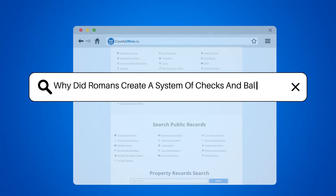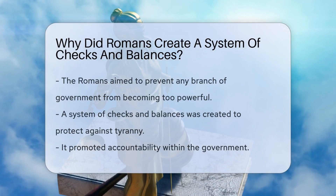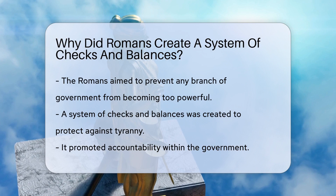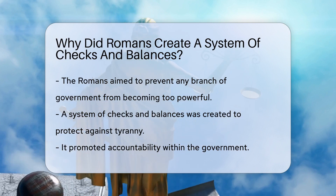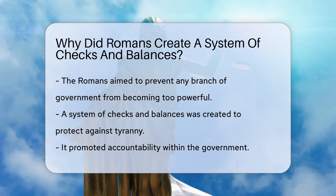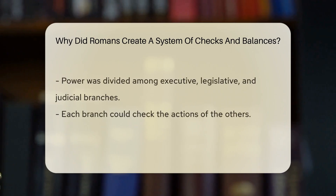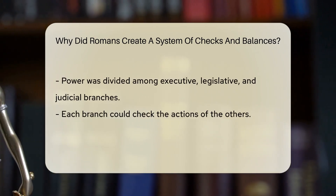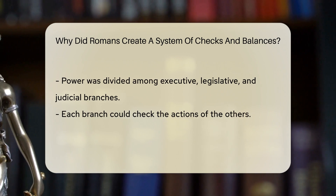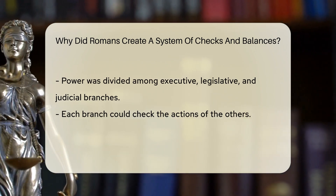Why did Romans create a system of checks and balances? The Romans created a system of checks and balances to prevent any one branch of government from becoming too powerful. This system aimed to ensure that no single individual or group could dominate the government, protecting against tyranny and promoting accountability.